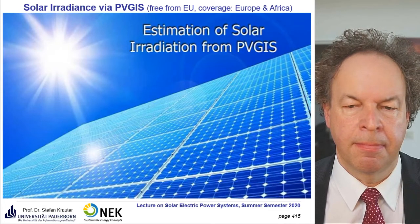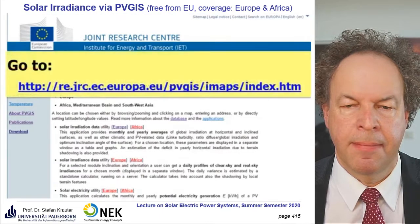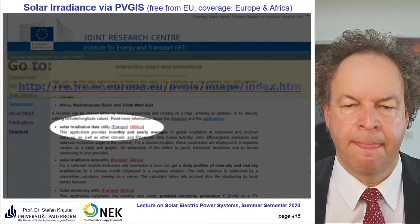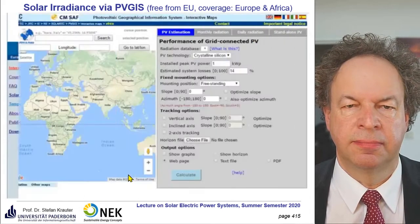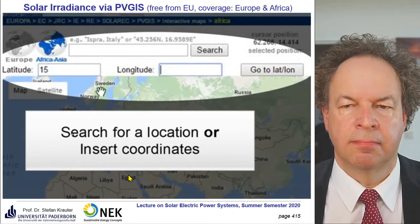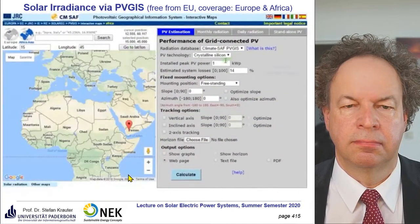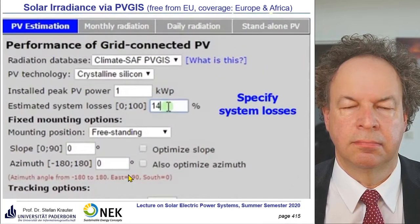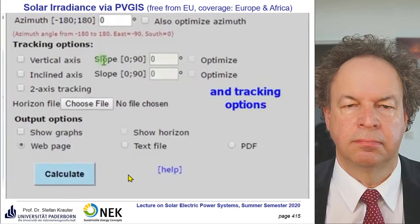In this video I will show you how to estimate solar irradiation using the PVGIS database. Go to the PVGIS website and click either Europe, or Africa and Asia. We will choose Africa and Asia. You can either search for a location or enter latitude and longitude — we will enter a location in the Middle East with 15 degrees latitude and 45 degrees longitude. In the PV estimation tab you can assess the performance of a grid-connected system, specifying system losses, tilt angle, orientation, and tracking options.